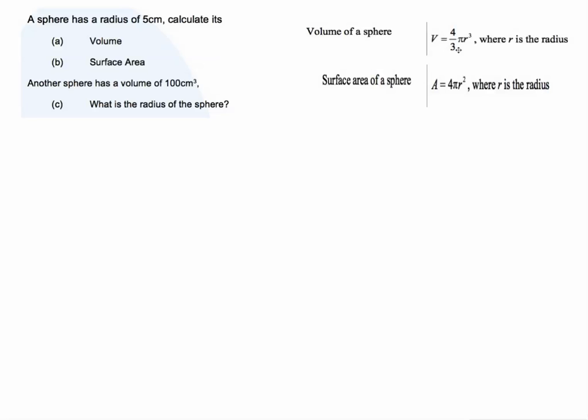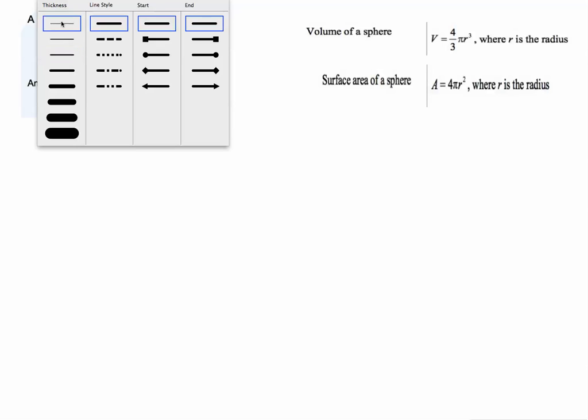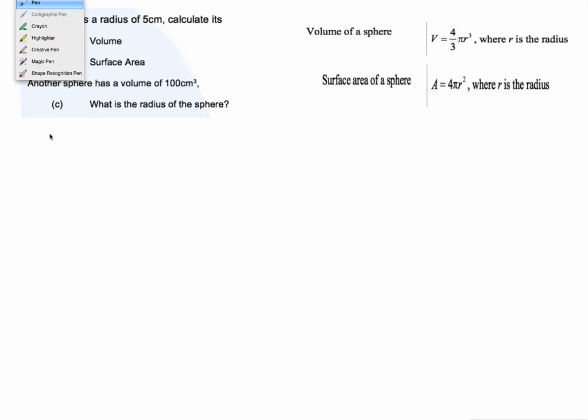The sphere, the volume, four thirds pi r cubed and the surface area, four pi r squared. So for section A, the first thing we need to do is to... I'll just change the thickness of that.